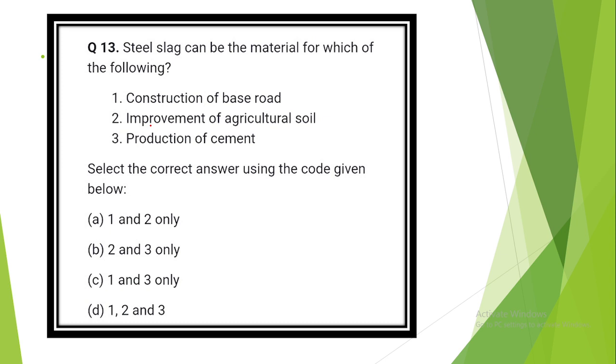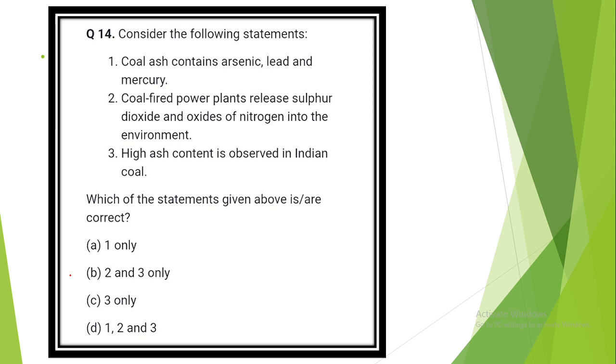Question number 12. For ensuring environmental sustainability or to reduce carbon footprint, the answer is option A: Copper slag, cold mix asphalt technology, geotextiles. Question number 13. Steel slag can be material for which of the following? The answer is option D: The construction of base road, improvement of agricultural soil, production of cement.